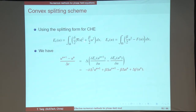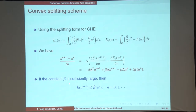Adding a beta stabilization term, if beta is sufficiently large — specifically if beta is greater than or equal to 2 when the solution u is bounded by 1 — we can verify that both E_c and E_e are convex, and derive a numerical scheme that satisfies the energy decay property. This energy stability is an important property for the numerical scheme.